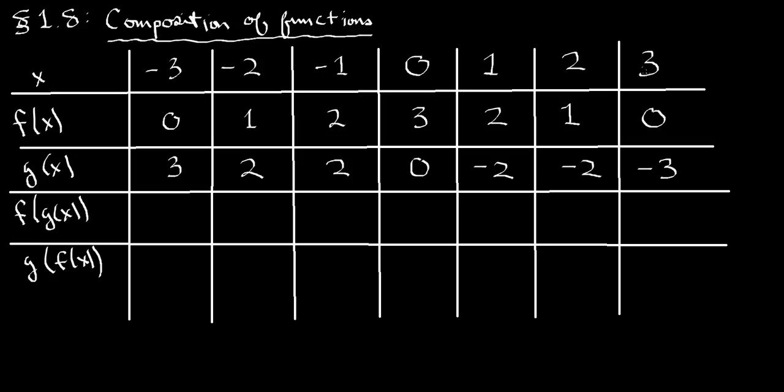So first, let's look at f of g of x. And so remember what this means. If you plug in x, let's say x equals negative 3, what you do is you plug that into g first. So what's the value for g at negative 3? It's 3. So now we take 3 and we plug that into f. Well, that's over. So we go all the way across here to 3. And what's the value there for f? Zero. So the answer here is zero.